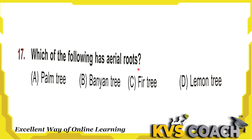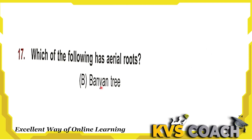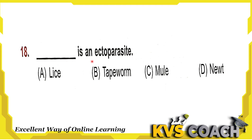Next question: which of the following has aerial roots? Palm tree — no. Banyan tree — yes, banyan tree has aerial roots, which means roots are present above the ground. Option C — fig tree — no. Option D — lemon tree — no. So the right answer is banyan tree, which has aerial roots. Did you know the banyan tree is our national tree?